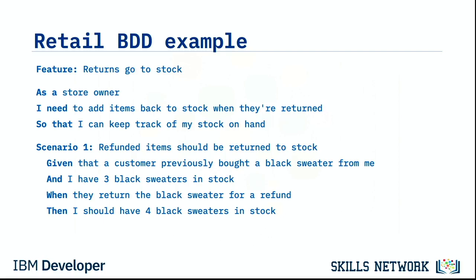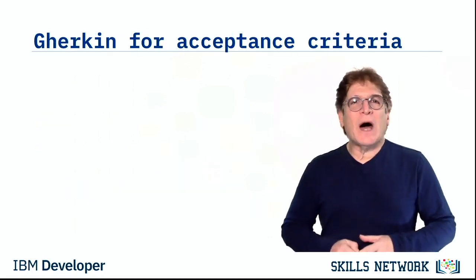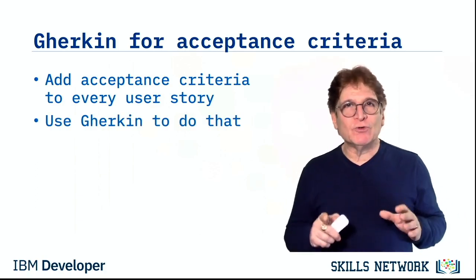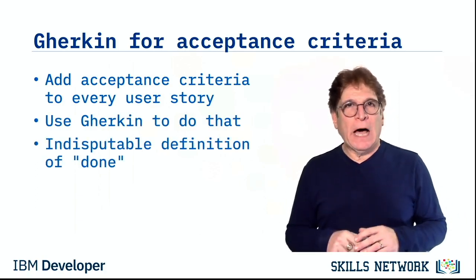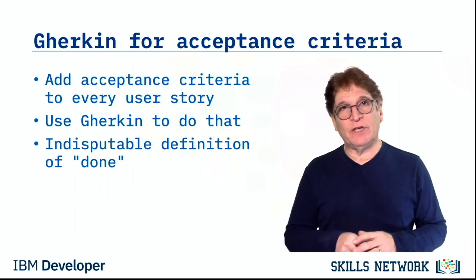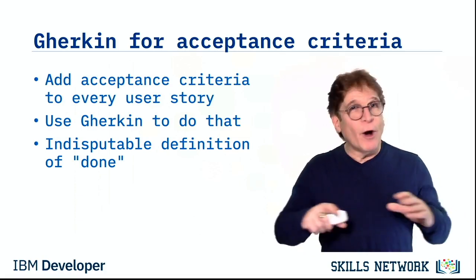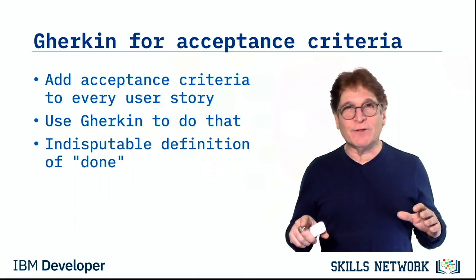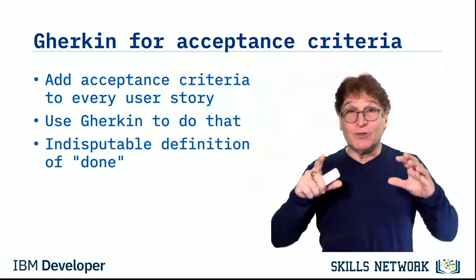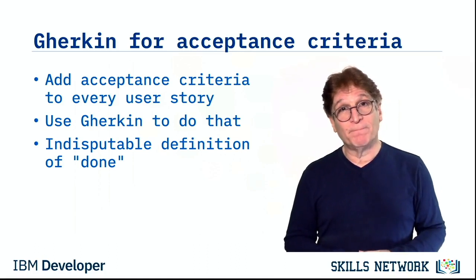That will put a smile on your developer's face. This is why I add acceptance criteria to every user story — I use the Gherkin syntax to define the acceptance criteria in the user stories that we write. There's no arguing over the definition of done at the end of the sprint. It's indisputable: the code either does or does not exhibit this behavior.